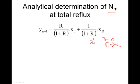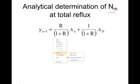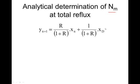We know that we have the top operating line, and from that we are going to start an analytical method to find out the number of minimum transfer units. Before that we have to get some idea about this, because this is the base — this is the foundation to get the minimum number of transfer units. This is the normal equation.